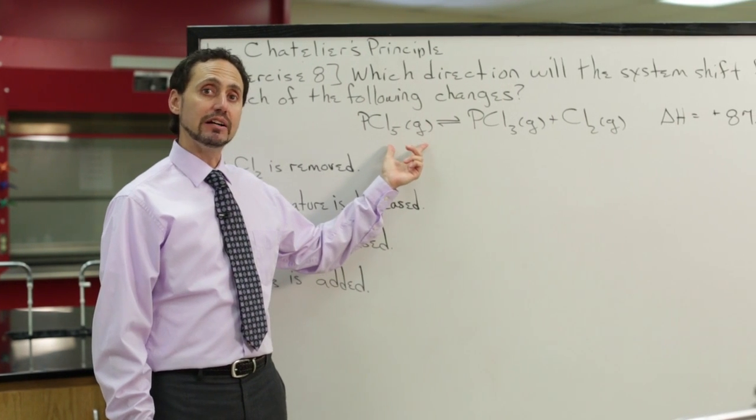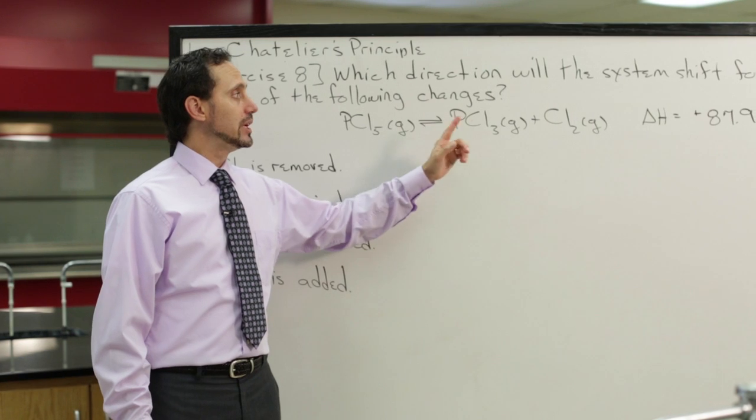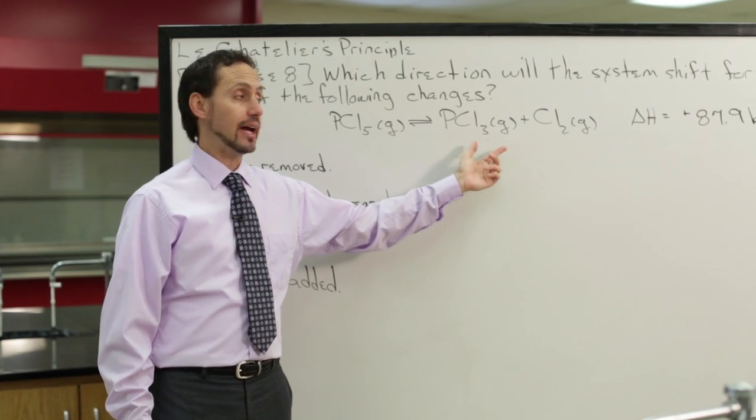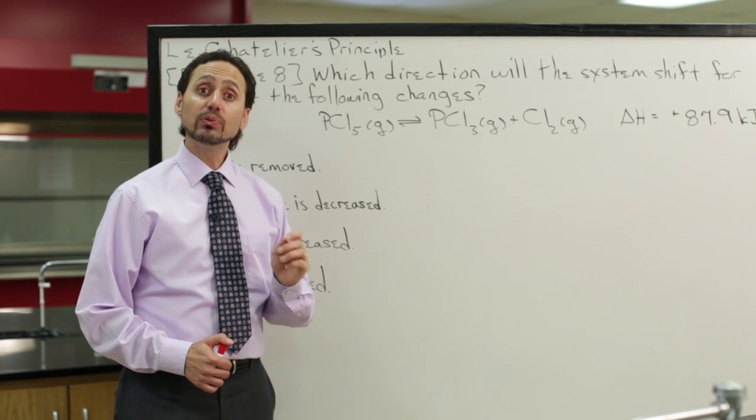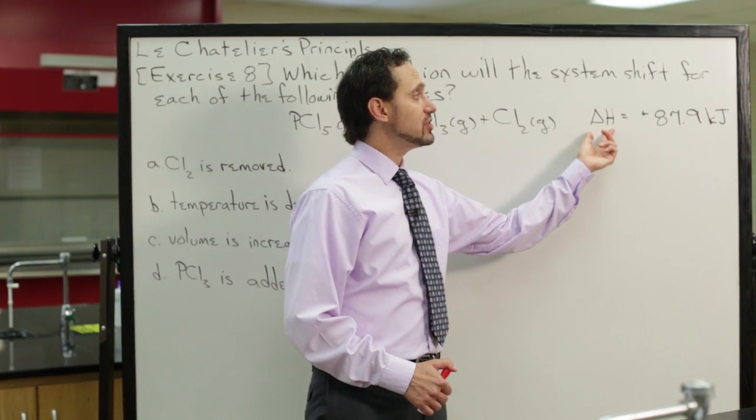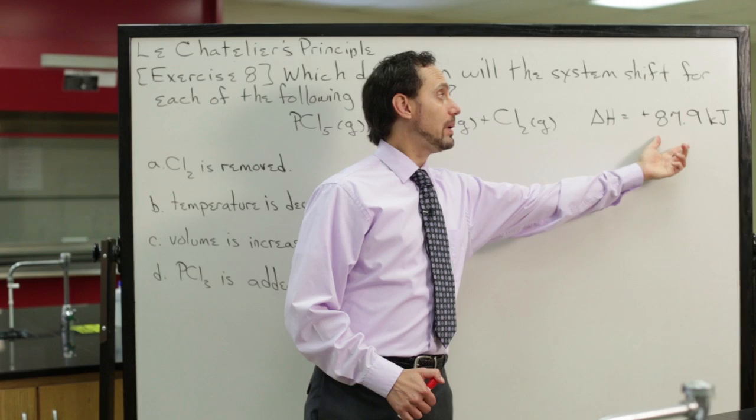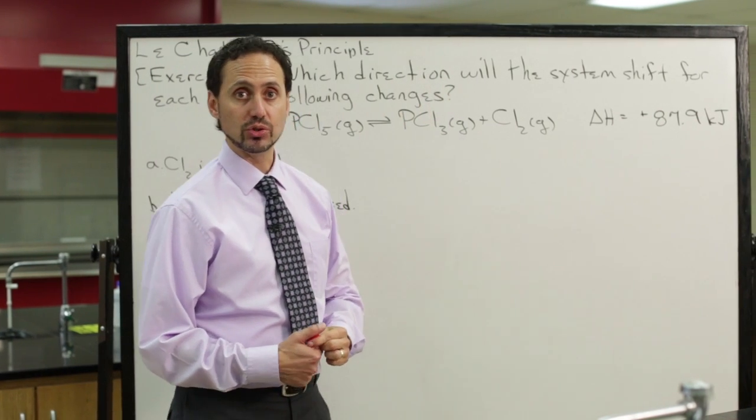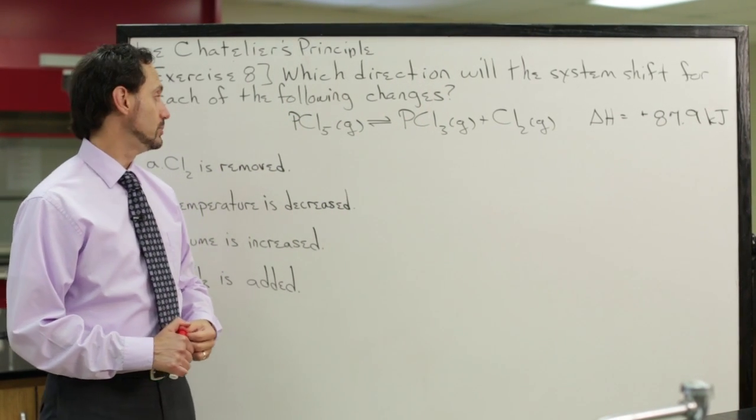We have one mole of PCL5 gas in equilibrium with one mole of PCL3 gas and one mole of chlorine gas. Another piece of information to pay attention to is that the delta H value for this equilibrium is a positive 87.9 kilojoules. That means this is an endothermic equilibrium.